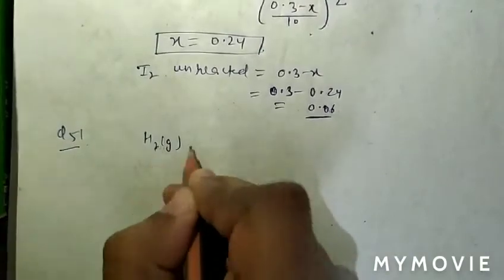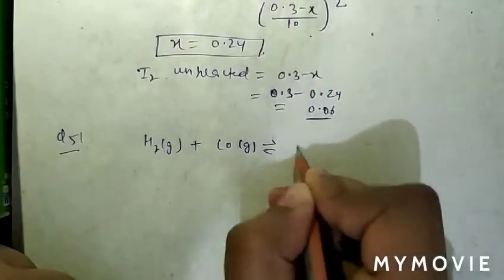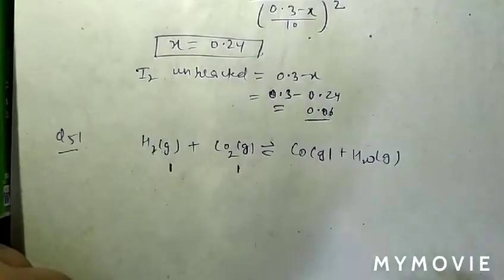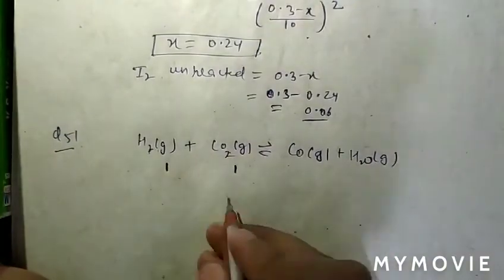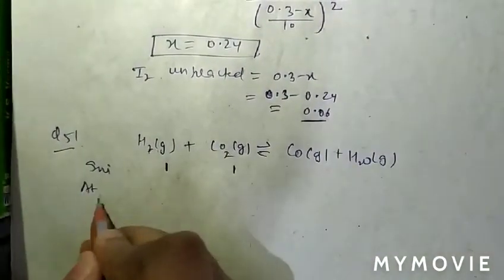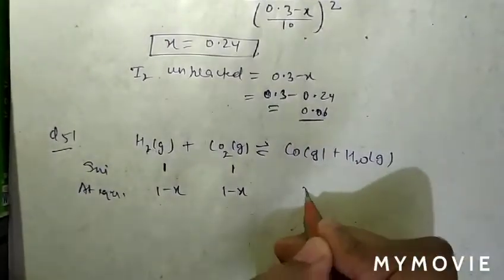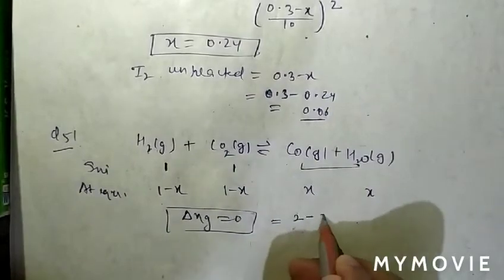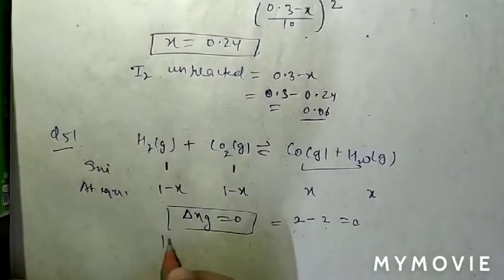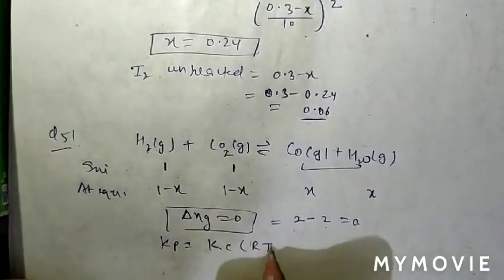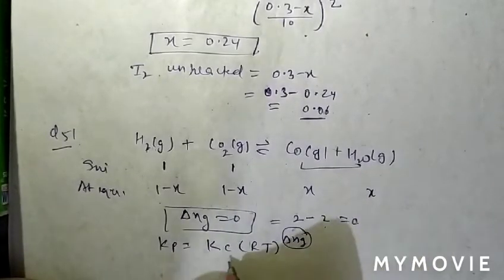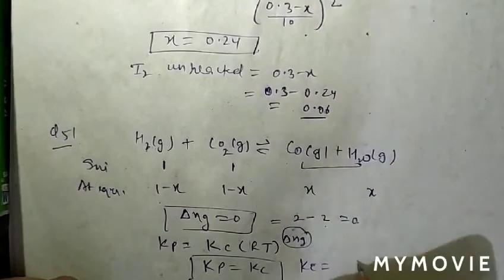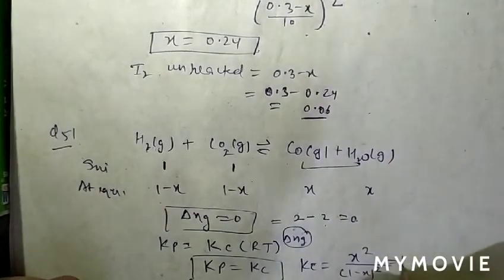Question 51: H₂(g) + CO₂(g) ⇌ CO(g) + H₂O(g). Initial moles of H₂ and CO₂ are one each. At equilibrium: 1−x, 1−x, x, x. Δng = 0 since gaseous moles are equal on both sides. Since Kp = Kc × (RT)^Δng and Δng = 0, Kp = Kc. Kc = x² / (1−x)² is the same as Kp. Question 51, option A is correct.